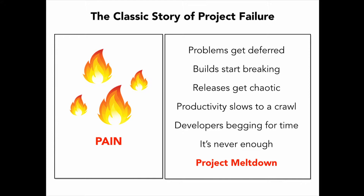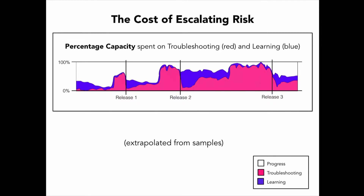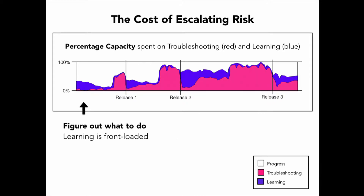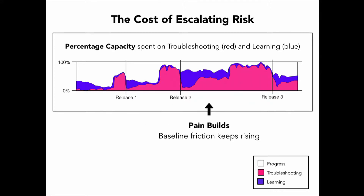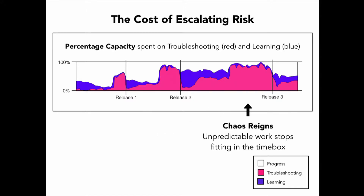I got on this project just as they were starting to get in the thrashing stage. You could see this pattern we always talk about of pain building up over time, but we've never really been able to see it. This is extrapolated from sample data, but these are some of the patterns you can see. Learning is usually front-loaded in the release as the team is figuring out what to do. Then there's this rush before the deadline where validation is deferred and you get this bubble of troubleshooting time. As pain builds, that baseline friction level keeps rising. Eventually chaos reigns and the unpredictable work stops fitting in the time box.